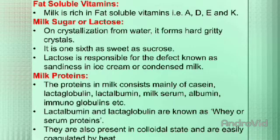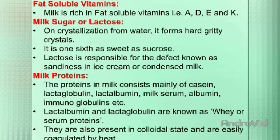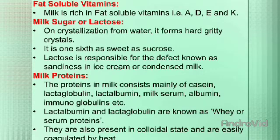The next is milk protein. The proteins in milk consist mainly of casein, lactoglobulin, lactalbumin, milk serum albumin, immunoglobulin, etc. Lactalbumin and lactoglobulin are known as whey or serum proteins. They are present in colloidal state and are easily coagulated by heat.